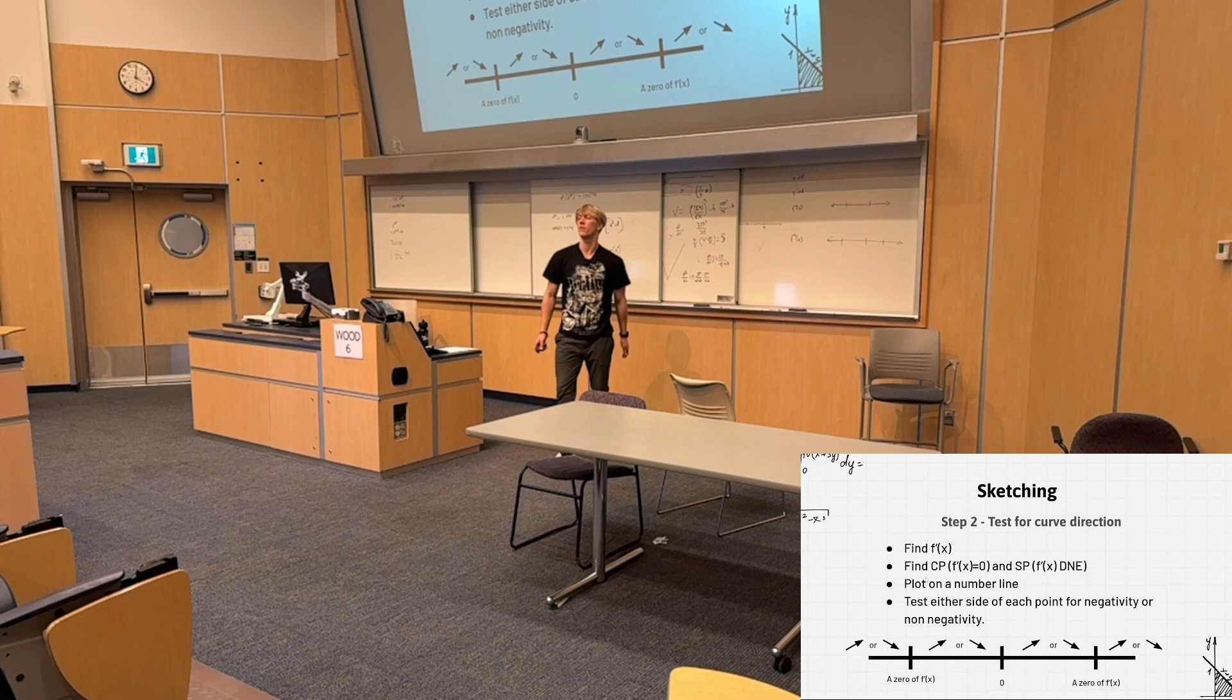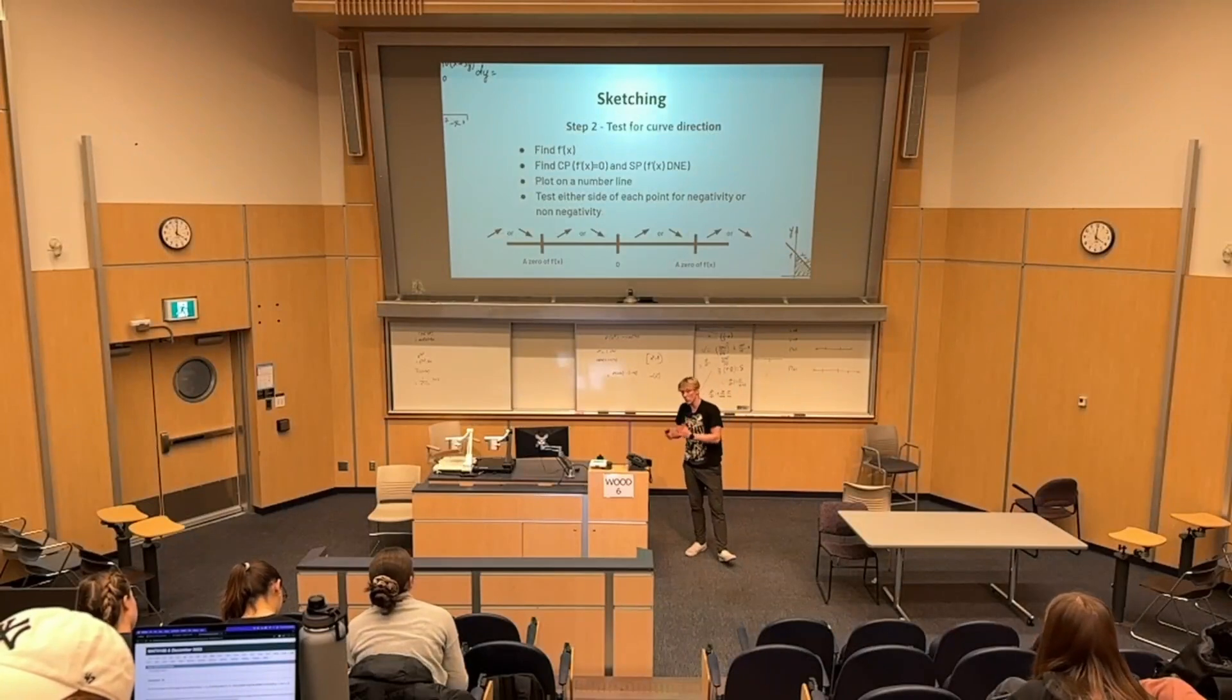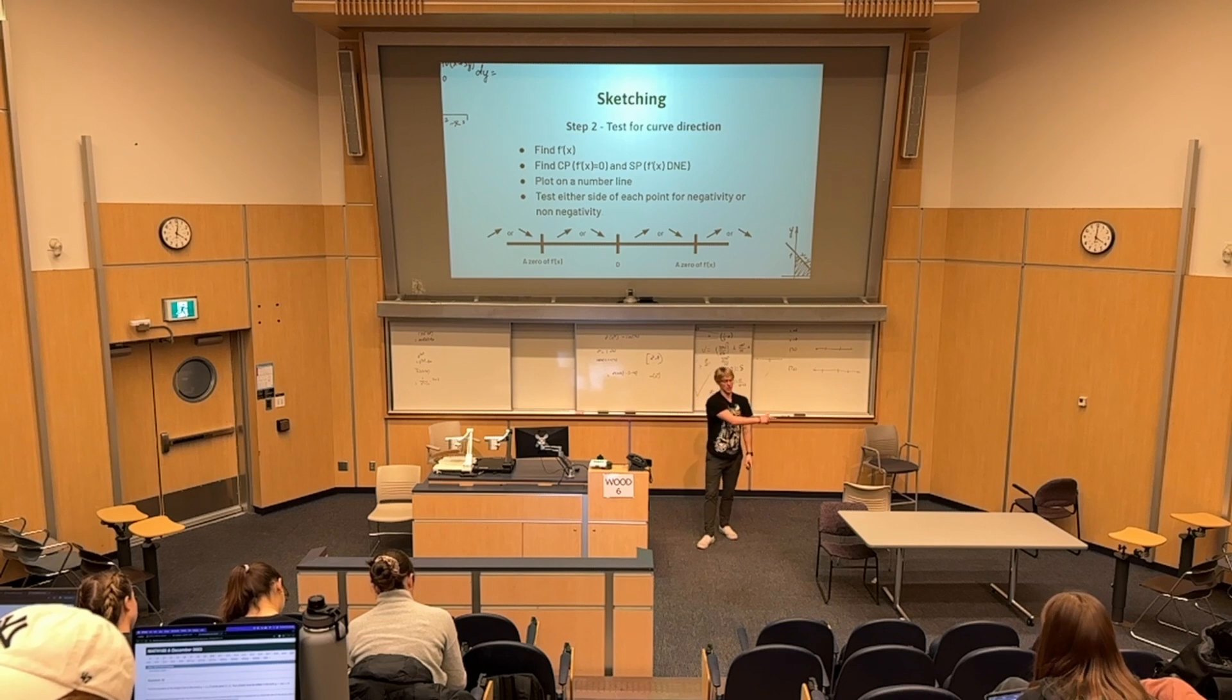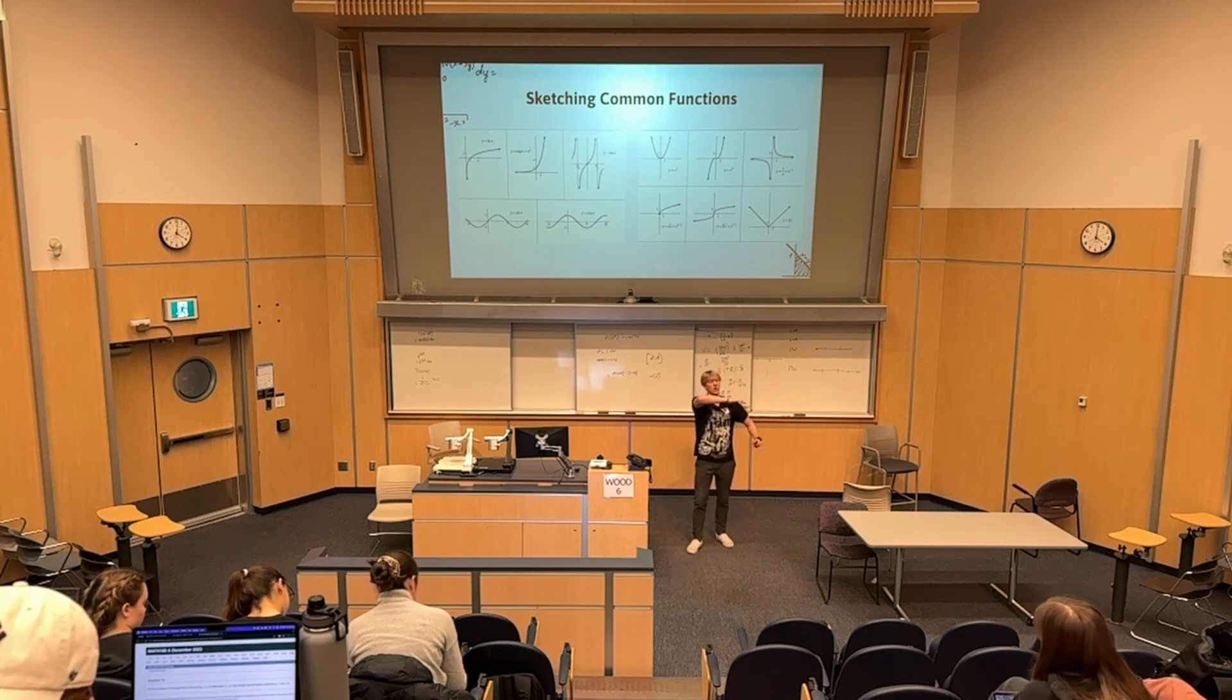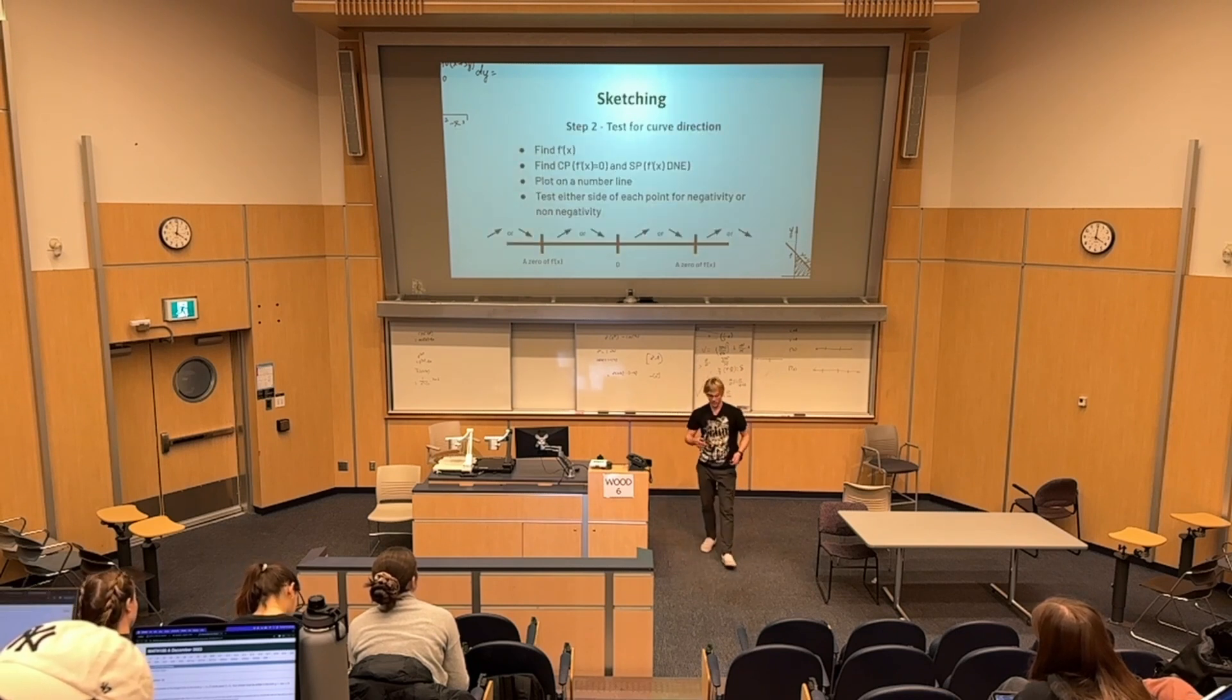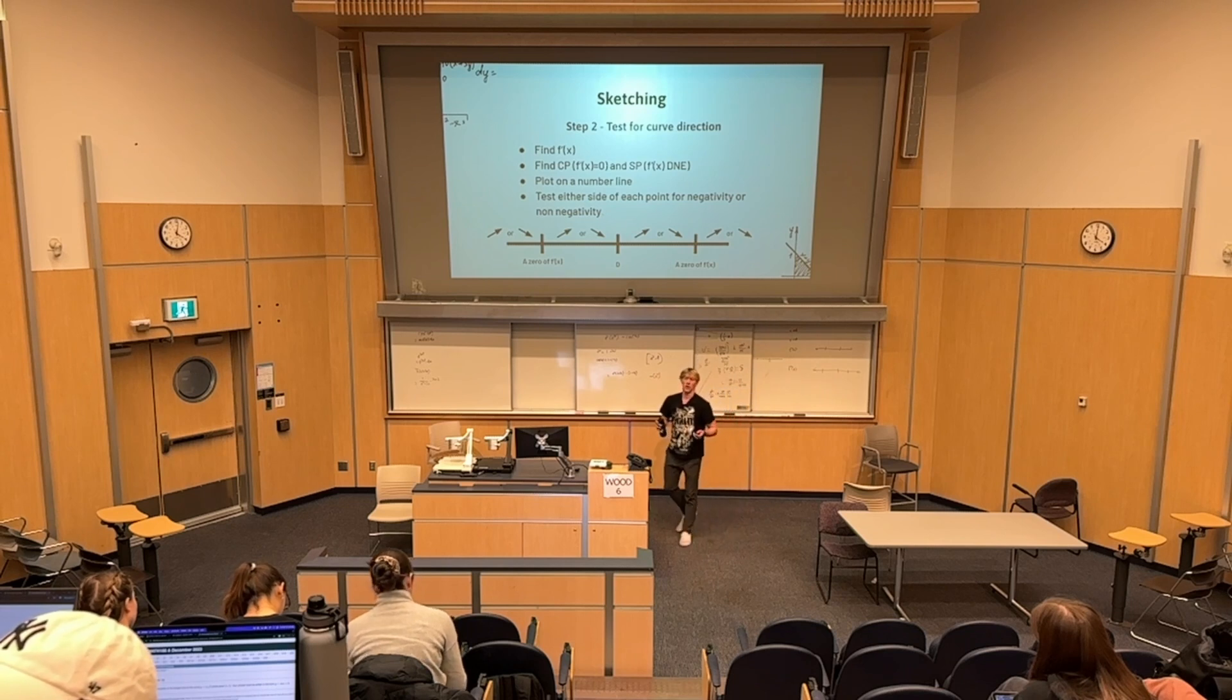Step two, you're going to take the first derivative of the function. Critical points are where the first derivative equals zero. Singular points are where the first derivative does not exist. Both of these are potential for local min or local maximum or global min, global max, but it's not for sure. So for a cubic function, if I go back here, there is the horizontal tangent line, but then the function just keeps increasing. So that's actually not a local min or a local max. Just because you have a critical point or a singular point, that's not enough to determine whether it is a local extrema, which is basically saying if it's a local max or a local min.